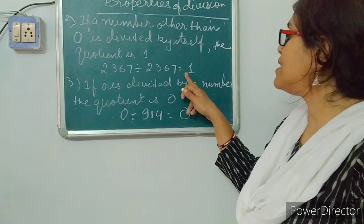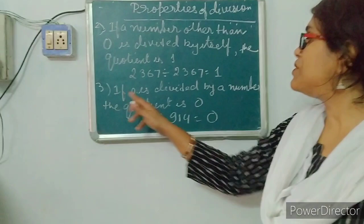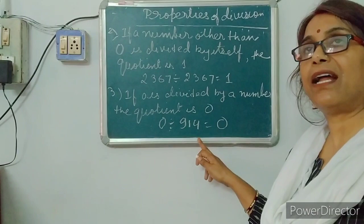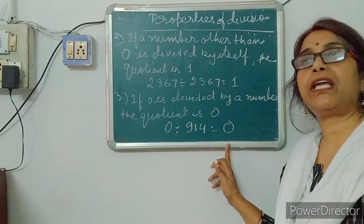Third property is: if 0 is divided by any number, the answer is 0. If 0 is divided by a number, the quotient is 0. For example, 0 divided by 940, the answer is 0. All these properties — 1, 2, 3 — you will write down in the copy.